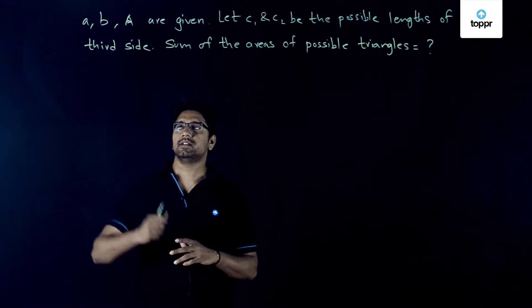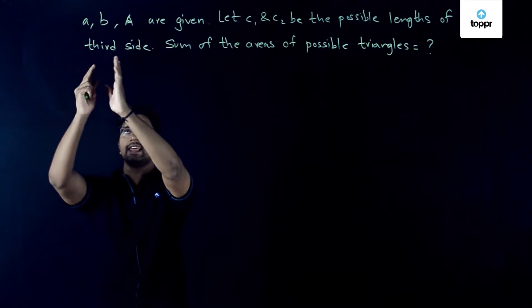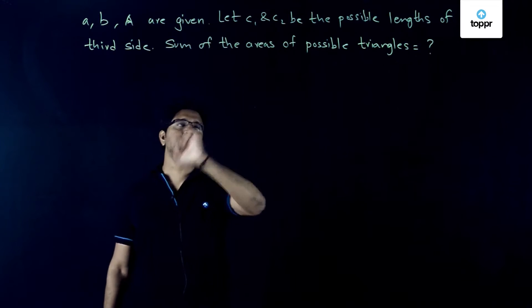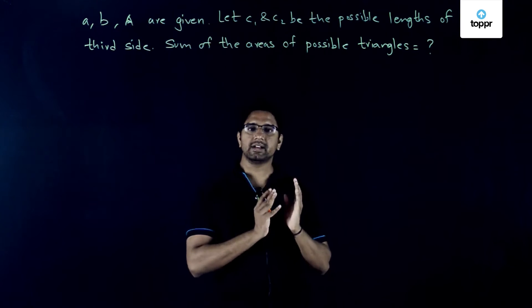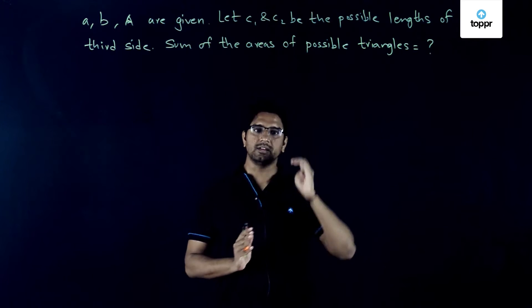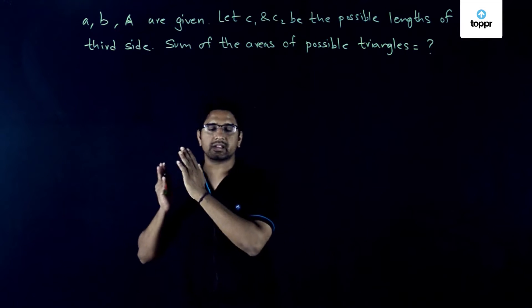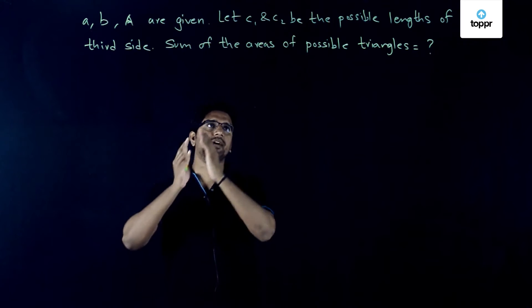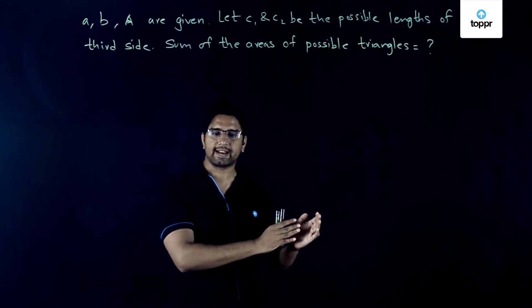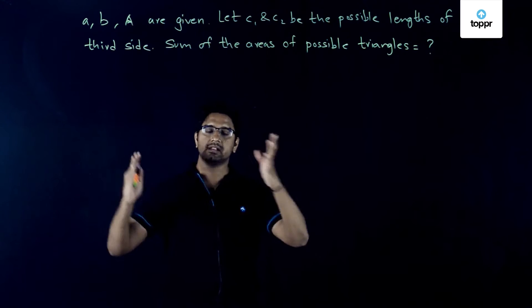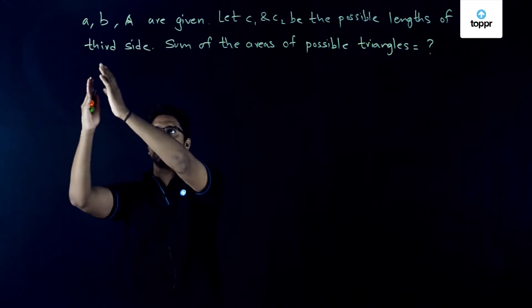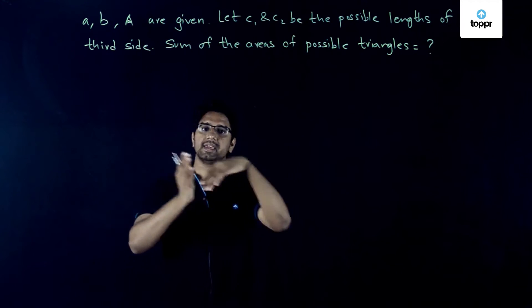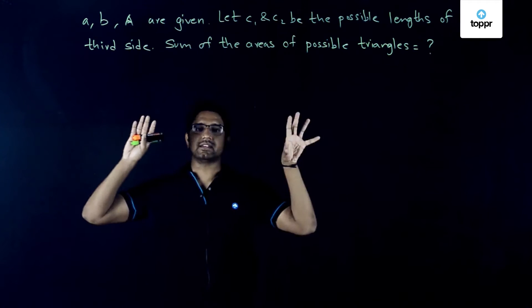In this problem, we are given the lengths of sides A and B and the angle A. Further, C1 and C2 are the possible values for the length of side C. We need to find the sum of the areas of the two possible triangles. The first triangle has sides A, B, and C1, and the next triangle has sides A, B, and C2.